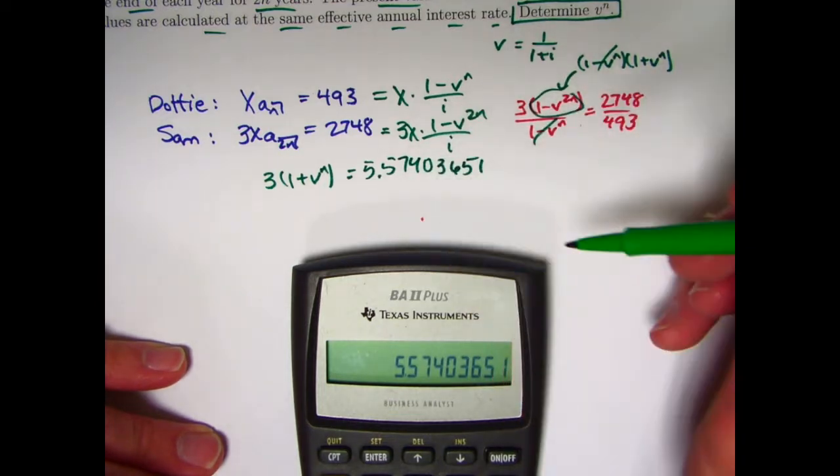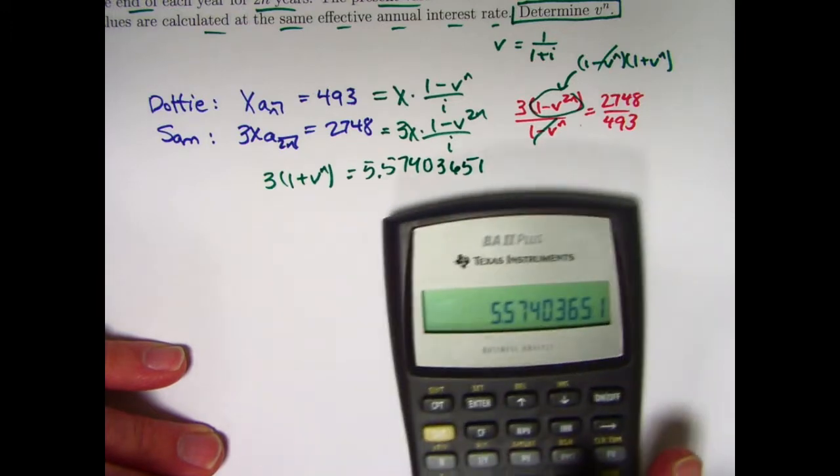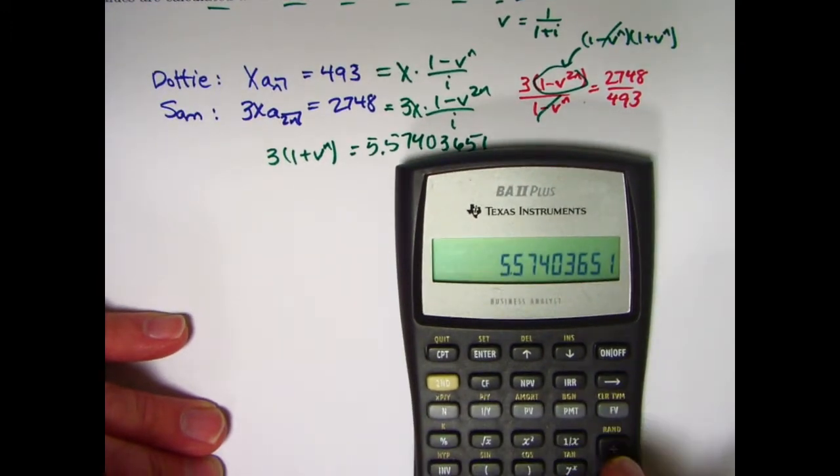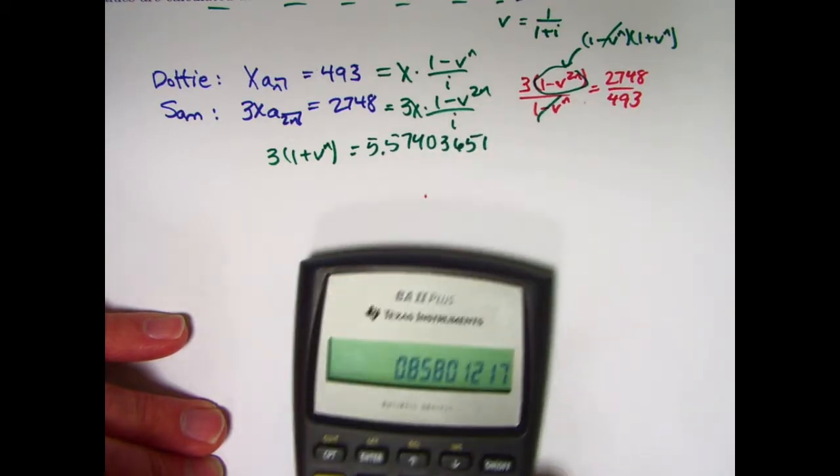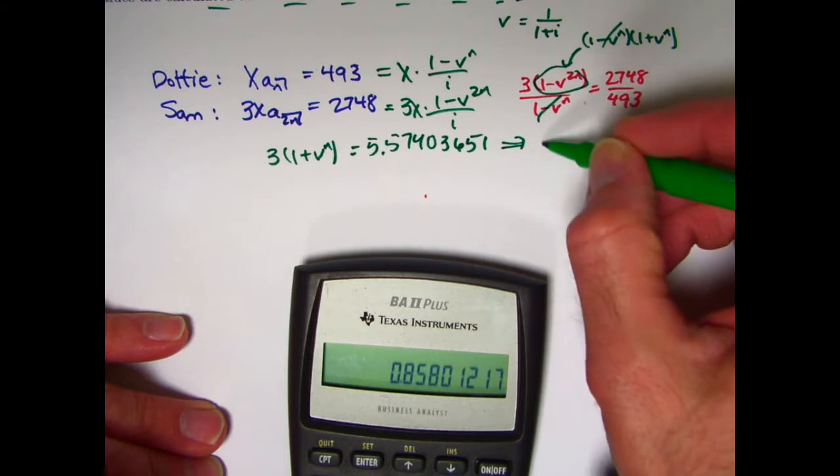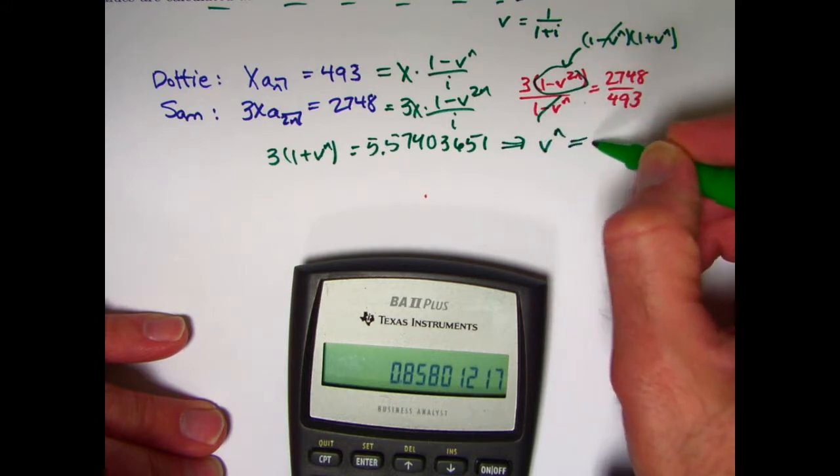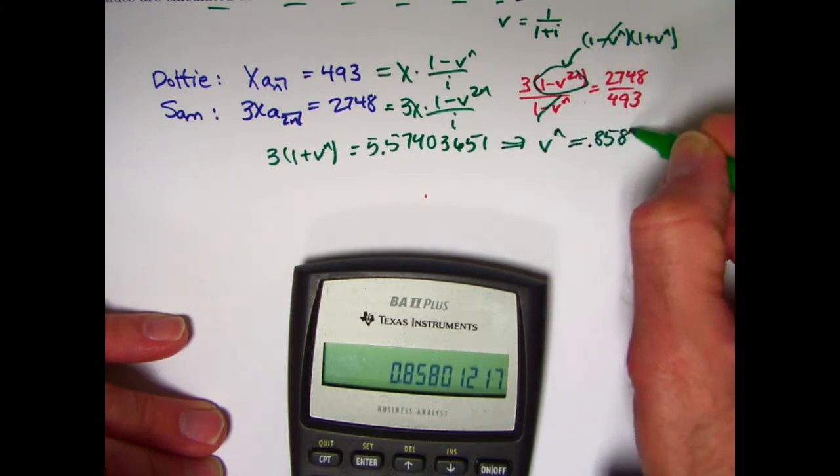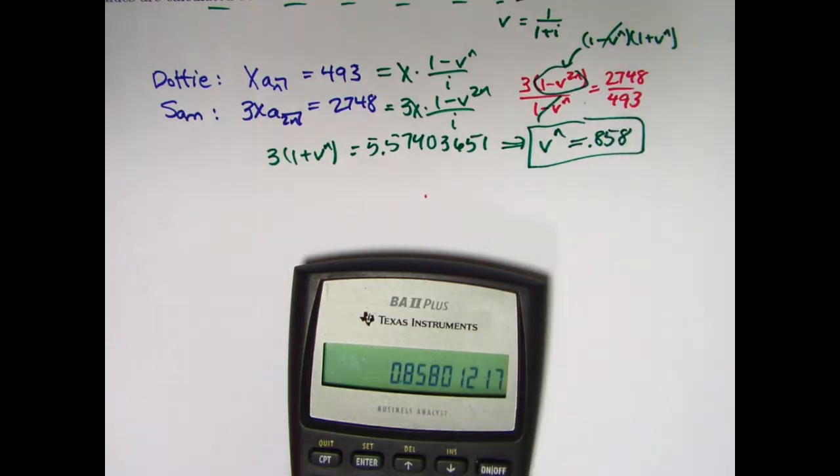Next, divide by 3 and then subtract 1. The value of v to the n is about 0.858. V to the n is approximately 0.858. And that is the answer. All right, let's solve this with a timeline now.